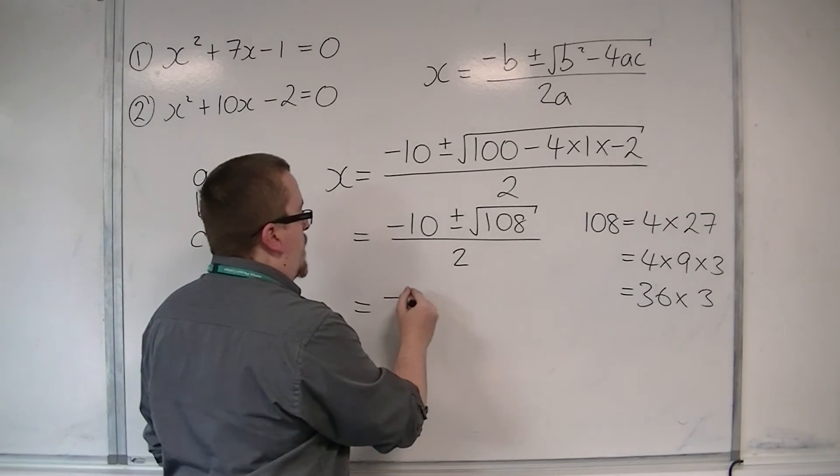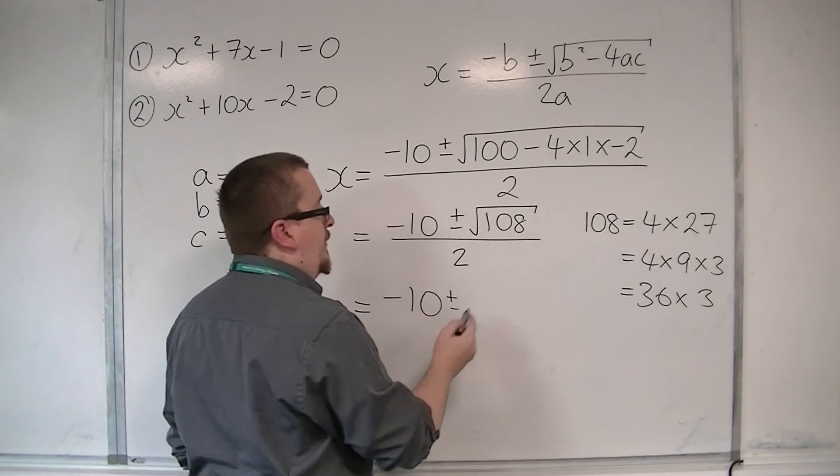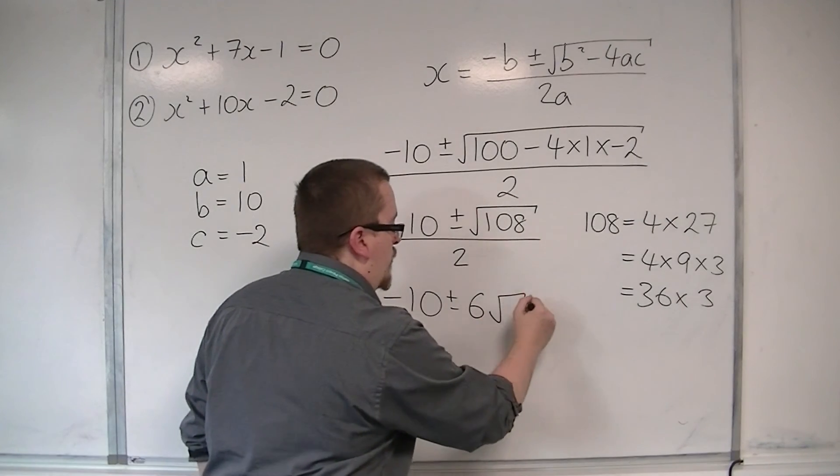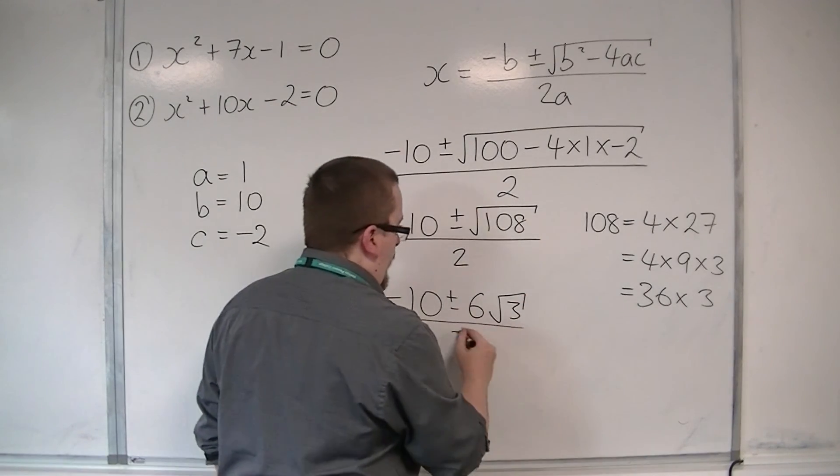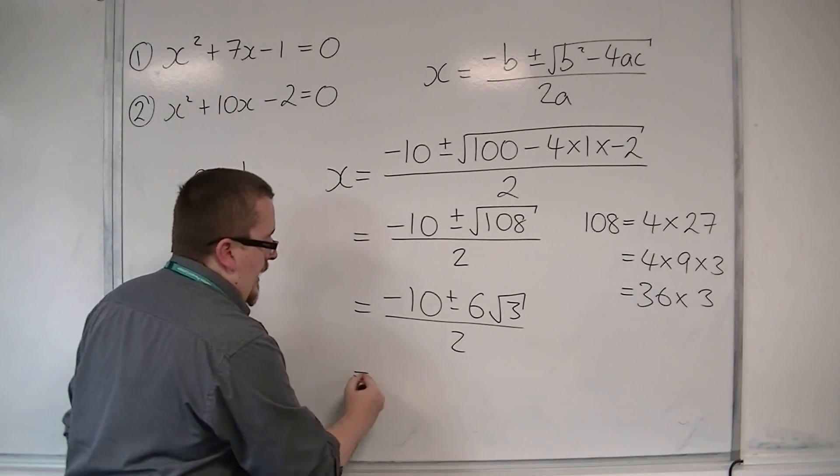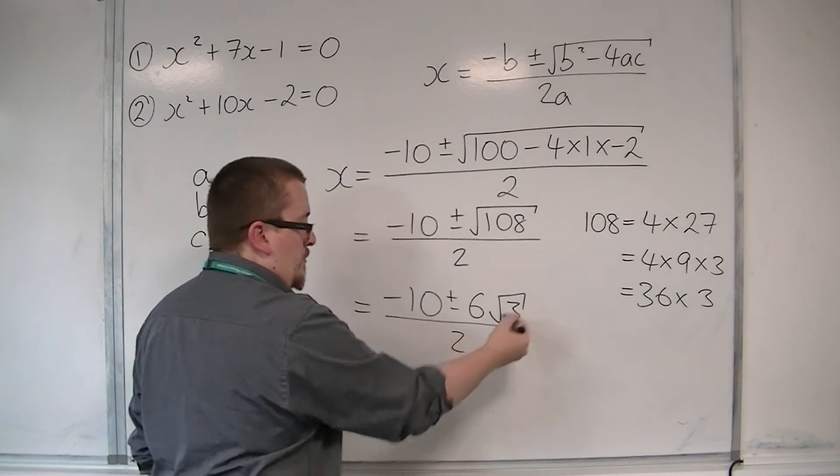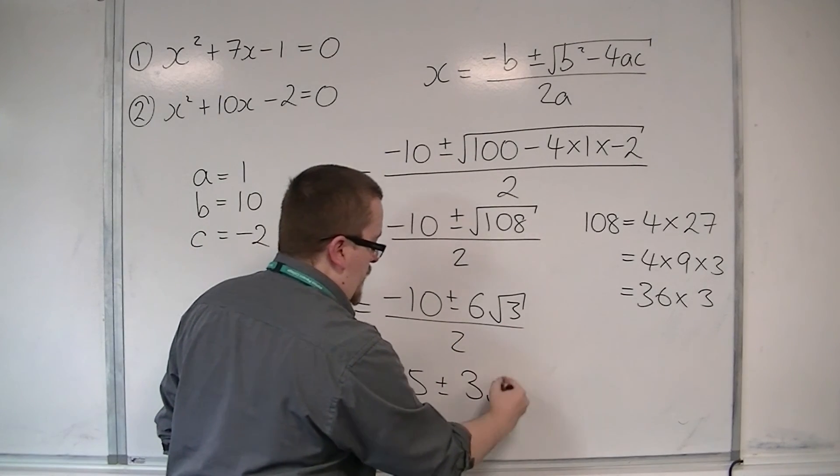So this is equal to minus 10, plus or minus, well, the square root of 108 is the square root of 36 times 3, so that's 6 root 3. All over 2. And then we can do minus 10 divided by 2 is minus 5, plus or minus 6 root 3 divided by 2 is 3 root 3.